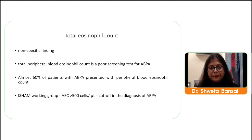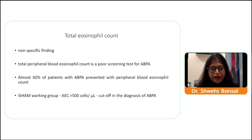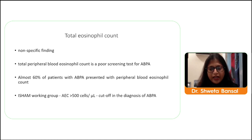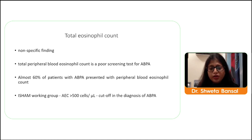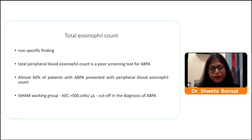Total eosinophil count is a very non-specific finding — many asthma and ABPA patients have high peripheral blood eosinophil count. It is a poor screening test, but very high counts warrant further evaluation. The ISHAM group recommends an absolute eosinophil count more than 500 as a cutoff for ABPA diagnosis.